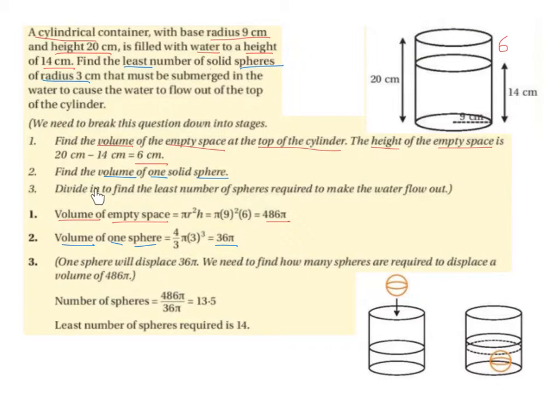Part 3: Divide to find the least number of spheres required to make the water flow out. One sphere will displace 36π, which we got from part 2. We need to find how many spheres are required to displace a volume of 486π, because that's the volume of the empty space. The number of spheres is going to be 486π, which is the volume of empty space, divided by 36π, which is the volume of one sphere, and we're left with 13.5.